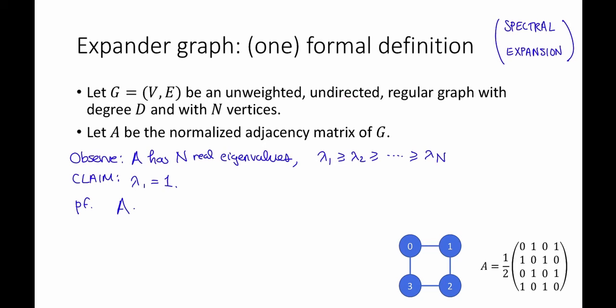First, note that A times the all ones vector is equal to the all ones vector. That's because every row of A sums to one. So this implies that one is an eigenvalue of A, and the eigenvector is the all ones vector.